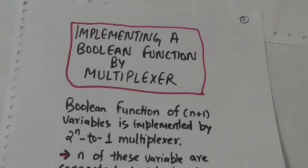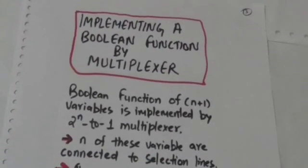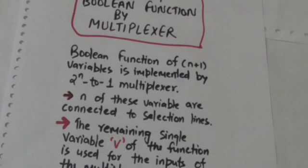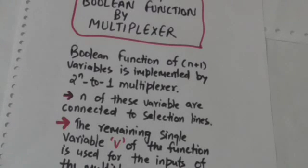Now we will learn how we can implement a boolean function by a multiplexer. A boolean function of n plus one variables is implemented by a 2^n to 1 multiplexer — that is, a multiplexer which has 2^n input lines and n selection lines.